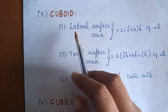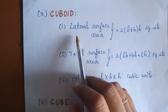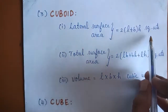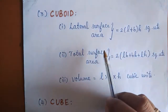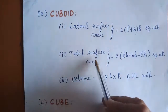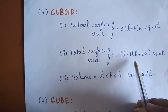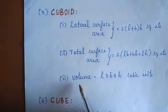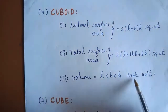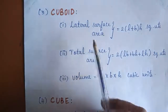Formula 3 is for a cuboid, which is a 3D figure. The lateral surface area of the cuboid is 2 into (L plus B) into H square units. The total surface area is 2 into (LB plus BH plus LH) square units. The volume of the cuboid is length into breadth into height cubic units. Let us see what lateral surface area and total surface area mean for a cuboid.